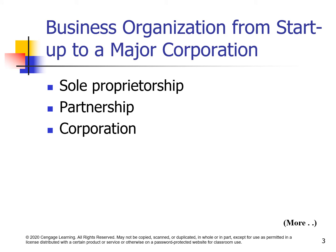Business organization from startups to a major corporation include three major different firms. First is sole proprietorship, second partnership, and third corporation.